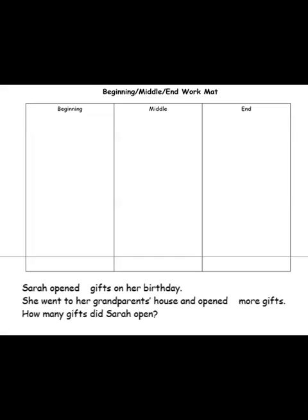Sarah opened some gifts on her birthday. She went to her grandparents' house and opened some more gifts. How many gifts did Sarah open? So what's happening in the story? We know it's Sarah's birthday and she's getting some gifts. It sounds like she already opened some gifts, and then she went to her grandparents' house and opened some more. We want to know how many gifts there were altogether. I'm imagining times where I've been at home and gotten gifts and then gone to grandparents' or an aunt's or uncle's house.